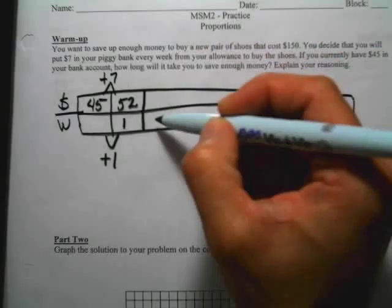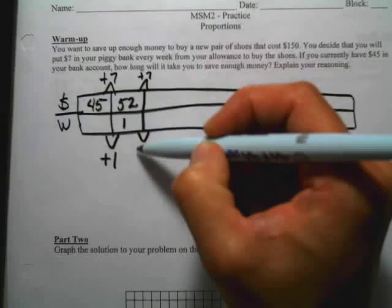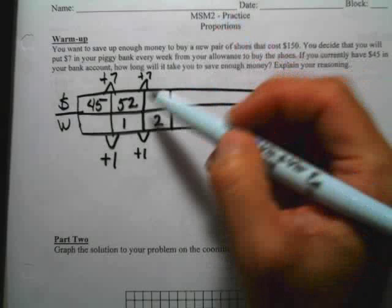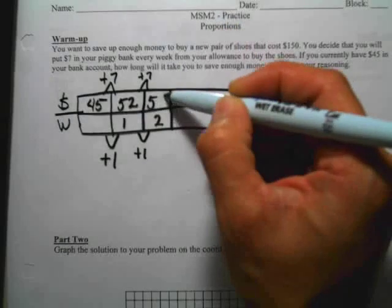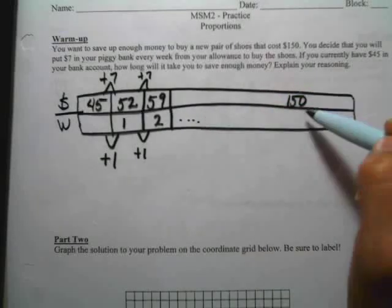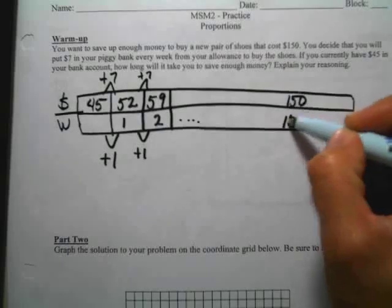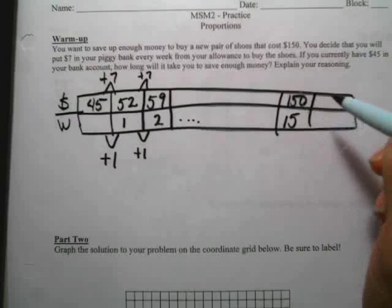Then, the next week, I'm going to save another $7. So I'm going to plus one down here. I'm going to get two weeks. And when I add $52 plus $7, I'm going to get $59. And so on and so forth until you get to this $150. And it's going to equal, when you really work it out, it's going to take you 15 weeks to save that $150.